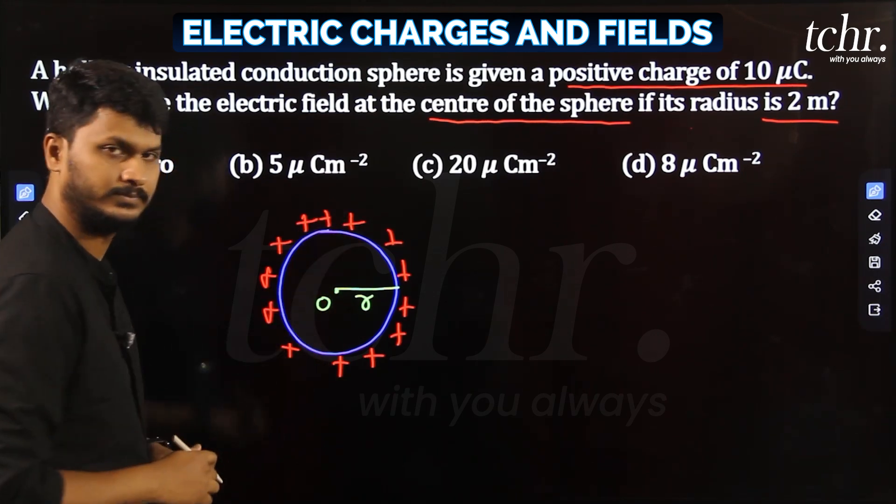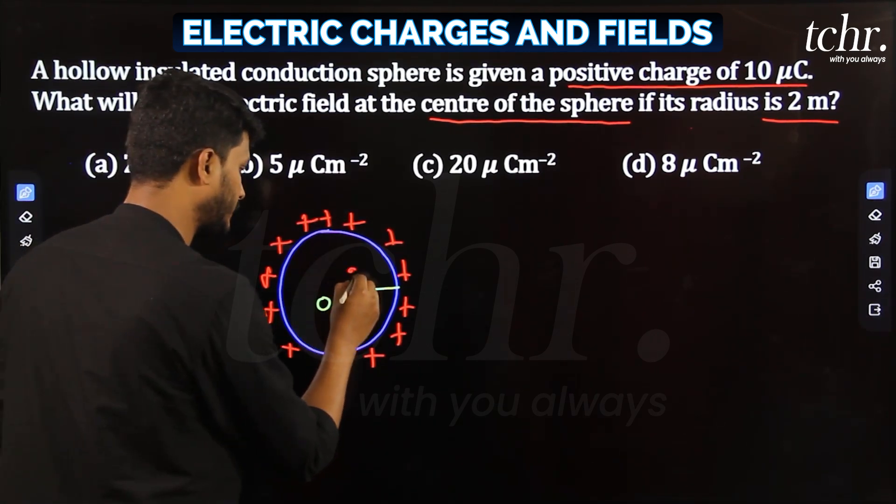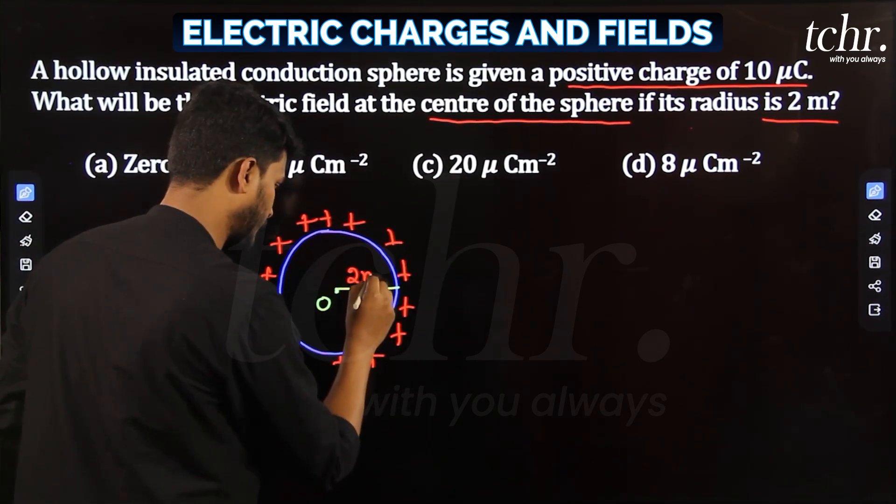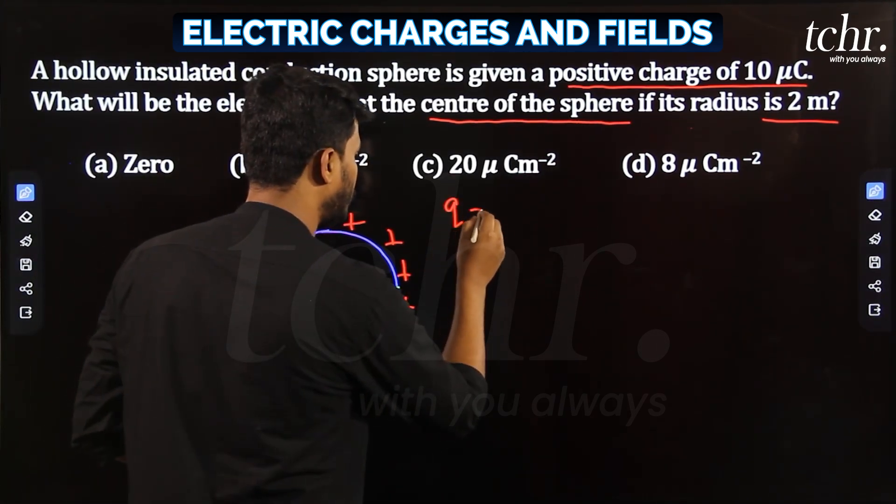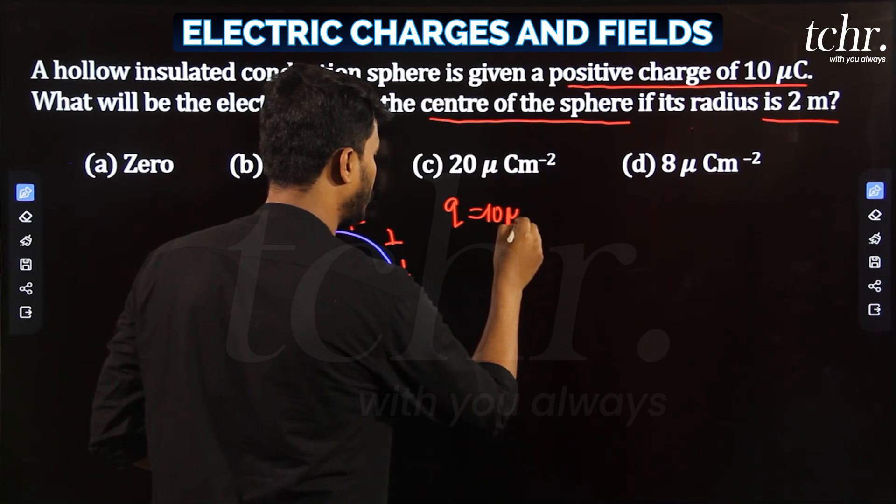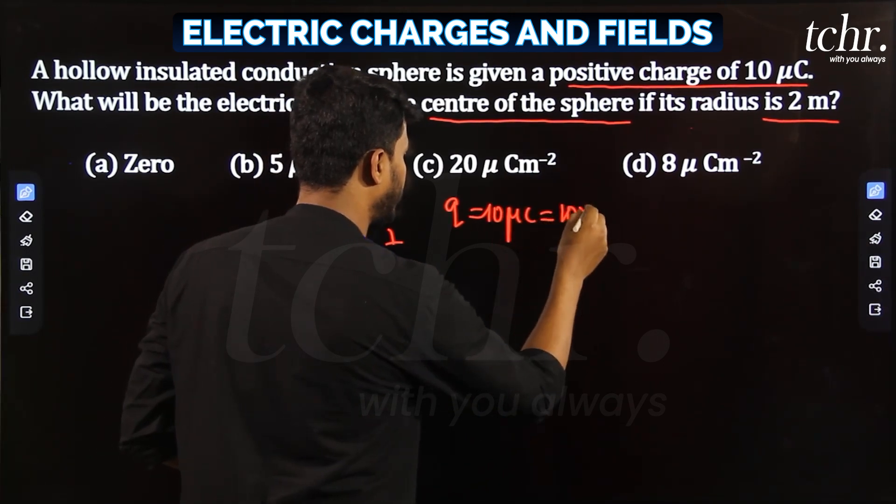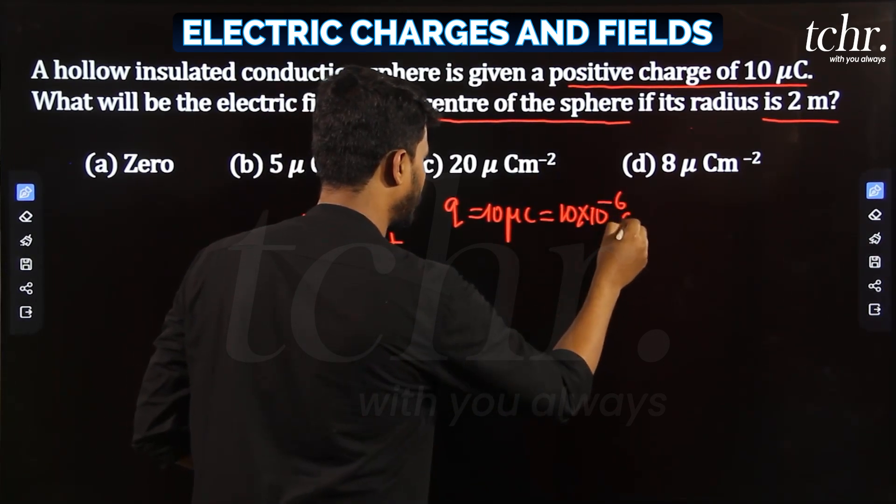This radius mentioned is 2 meters, not 2 centimeters. The charge value given is Q = 10 microcoulomb, which is 10 × 10^-6 coulomb.